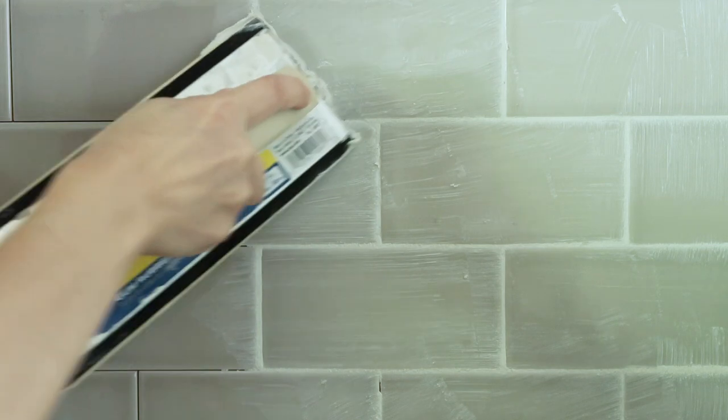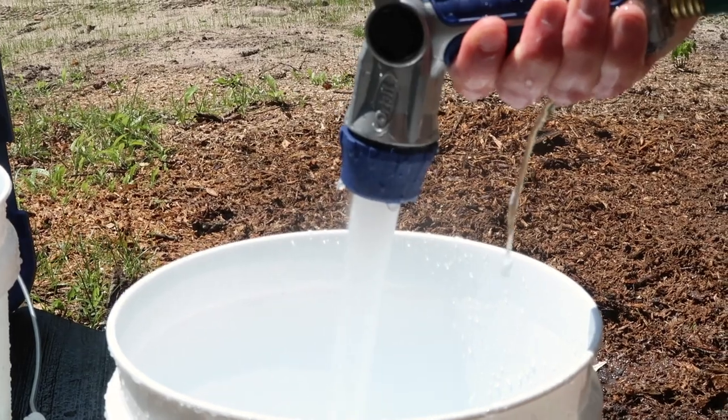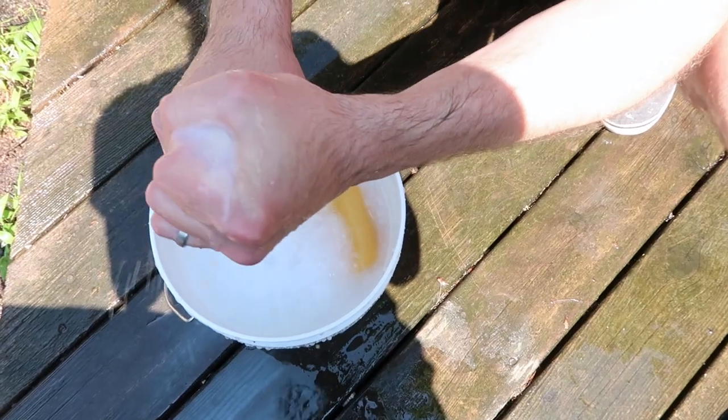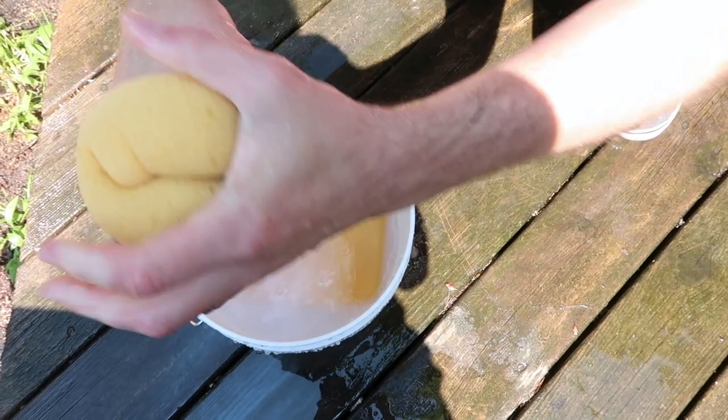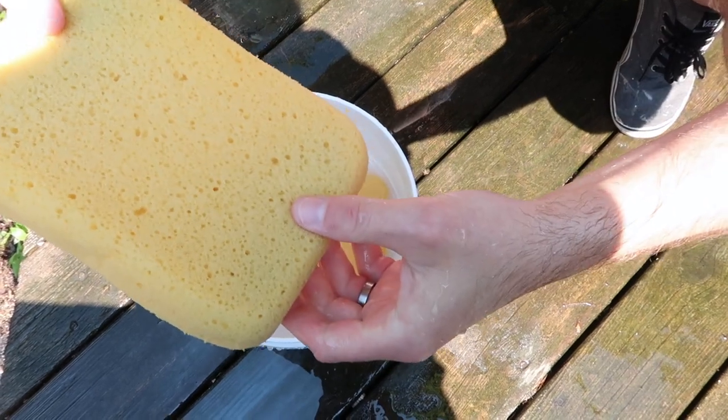Fill your float with grout, run it over the tiles making sure that the grout fills every crack. Using a clean damp sponge, swipe over the grout, turn the sponge over and swipe it again. Making sure that the sponge is clean is very important, you don't want the grout to dry on top of the tile.